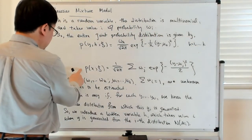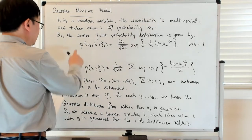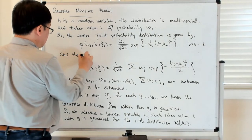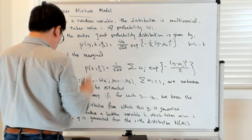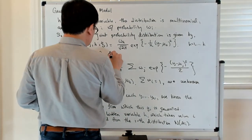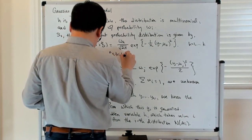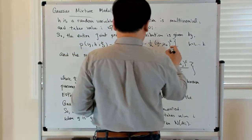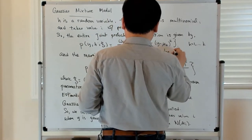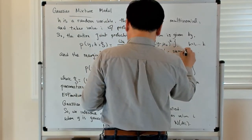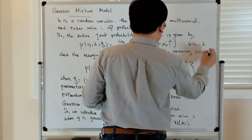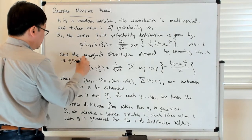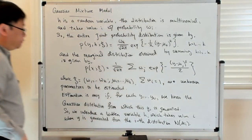And then what happens is that this now is the marginal distribution of this joint probability distribution, which is obtained by summing h going from one to k, and is given by this expression.